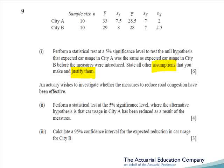Moving on to part two, we're going to test whether car usage has been reduced in city A, comparing Z with Y, denoted by X. Don't get caught out — we're not going to use a two-sample t-test here since the data are paired, as we're talking about 10 households before and after the change was introduced. In part three we're asked to calculate a 95% confidence interval for the reduction in city B. Again, we'll be using our paired result, doing a confidence interval on a single sample of differences.